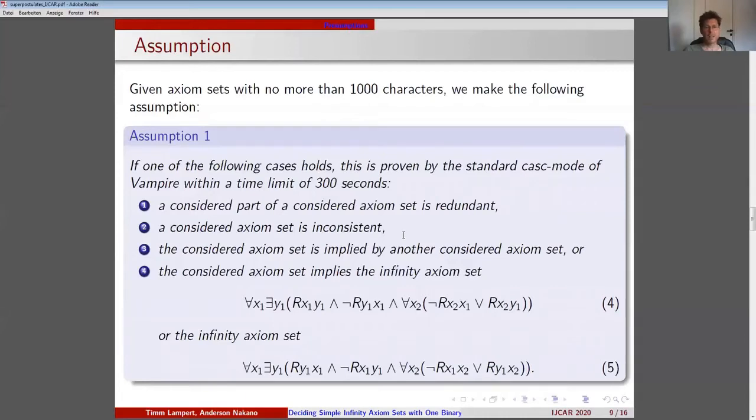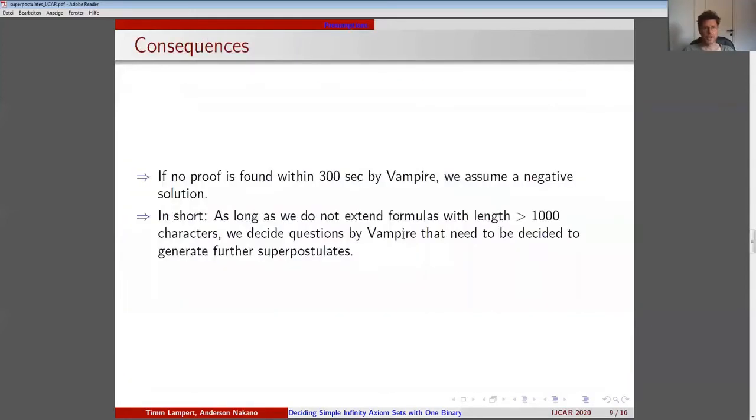The infinity axiom sets mentioned in item 4 are very weak. Formula 4 is implied by axiom 1, axiom 2, and axiom 4 of DLOR. Formula 5 is the counterpart of formula 4 resulting from applying our rule 2 to formula 4. Item 4 ensures that considered axiom sets are not satisfiable in a finite domain.